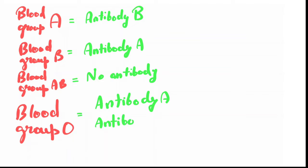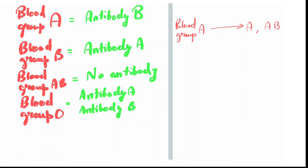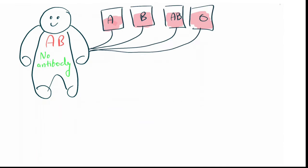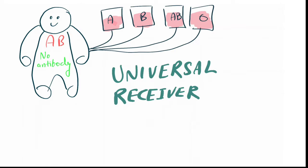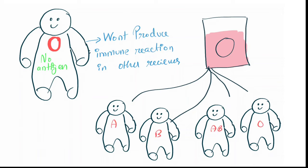Through this we can understand blood transfusion more easily. Blood group A can give blood to blood group A and AB. Blood group B can give blood to blood group B and AB. Blood group AB can only give blood to persons with the same blood group. Blood group O can donate to all groups and is known as the universal donor.